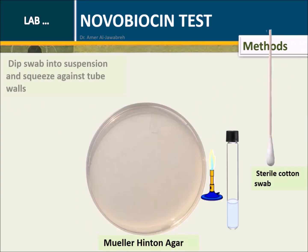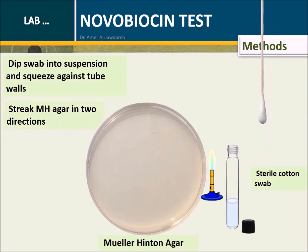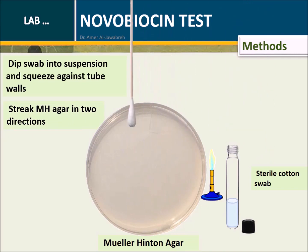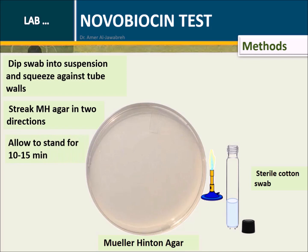Methods: Dip a swab into the suspension and squeeze against the tube walls. Streak Mueller-Hinton agar in two directions, then allow to stand for 10 to 15 minutes.